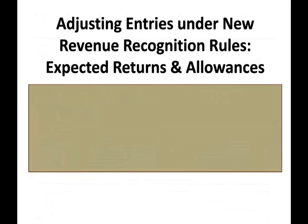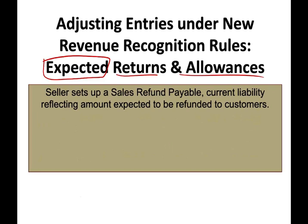Under the new revenue recognition principle, we also have to record expected returns and allowances — we are proactively accounting for those. The seller sets up a sales refund payable. At year-end, we estimate how much we're going to have to pay back. If somebody returns an item or we give them a discount, we have to give them back money or reduce their accounts receivable. Therefore, we set up a sales refund payable, which is a current liability reflecting the amount expected to be refunded.